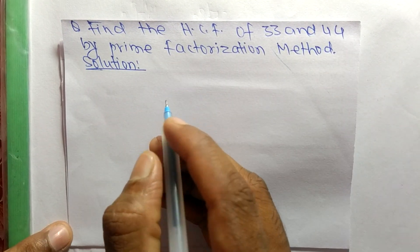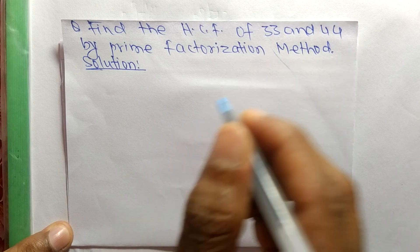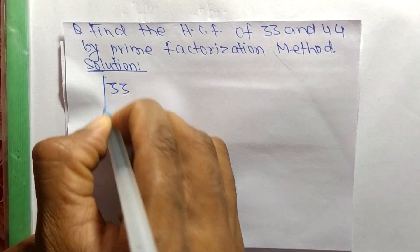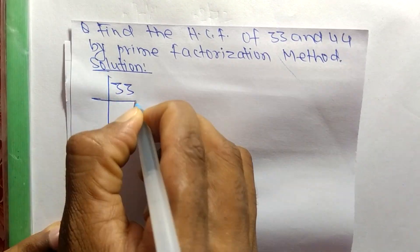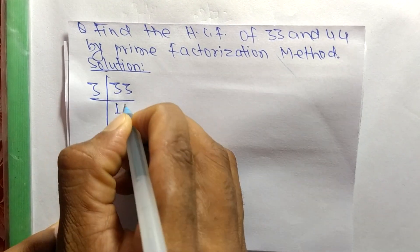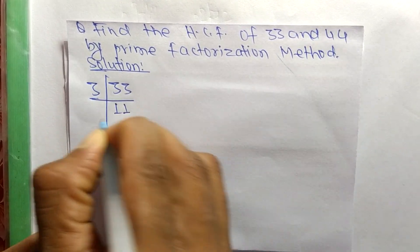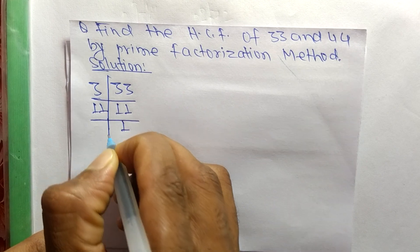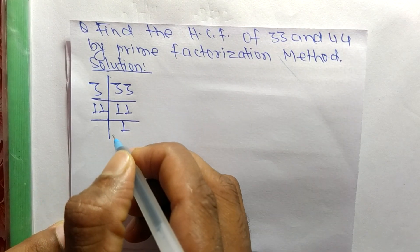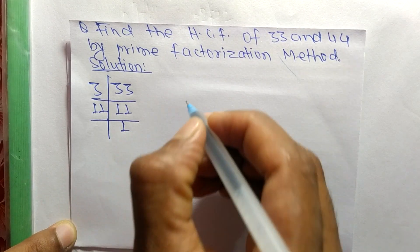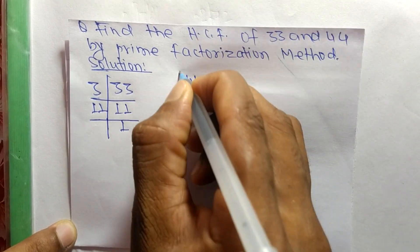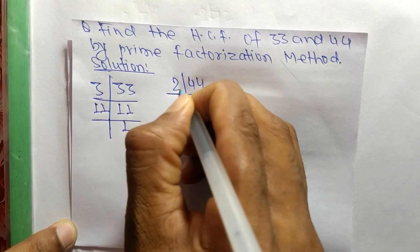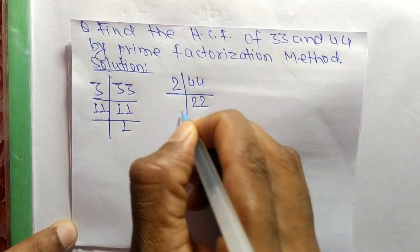First we find out the prime factors of 33: it is 3 times 11, which equals 33, and 11 times 1, which equals 11. Similarly, the prime factors of 44 begin with 2 times 22.